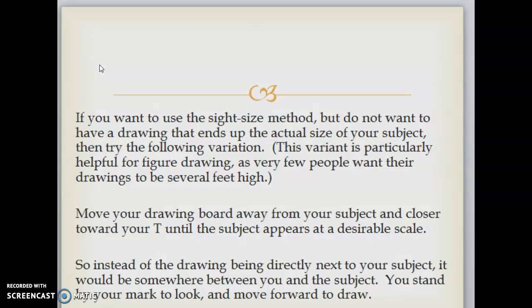You don't have a six-foot piece of paper so that you can draw someone that's exactly the same size as the person you're drawing. So move your drawing board away from your subject and closer toward your T until the subject appears at a desirable scale. Instead of the drawing being directly next to your subject, it would be somewhere between you and the subject. You stand by your mark to look and you move forward to draw.